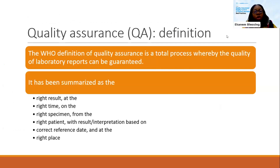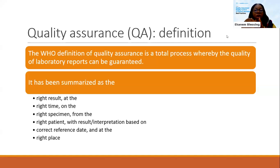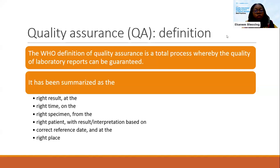Looking at the WHO definition, quality assurance is defined as a total process whereby the quality of laboratory results and reports can be guaranteed. Any step put in place beginning from patient identification, sample collection and sectioning, the entire processing of the sample up until the result is reported, archived, and samples are stored — all those processes together constitute quality assurance. It is summarized as: the right result, at the right time, on the right specimen, from the right patient, with result interpretation based on correct reference data, and at the right place.